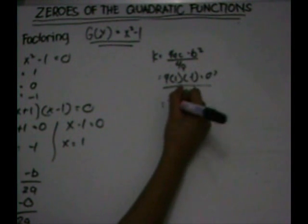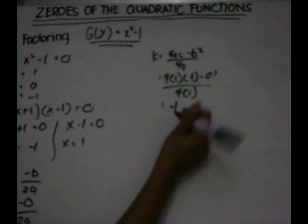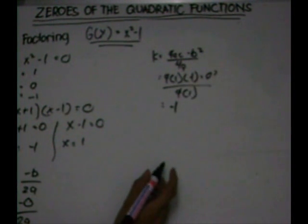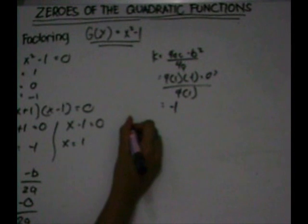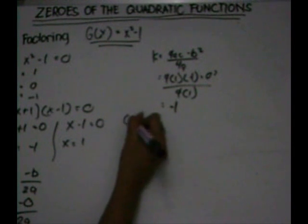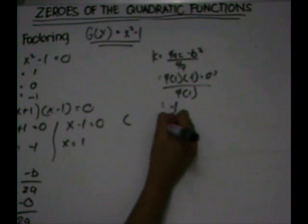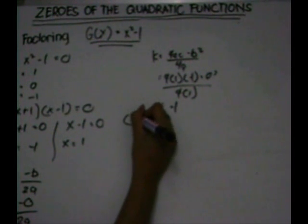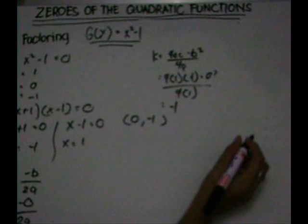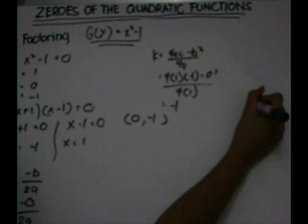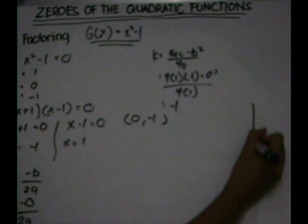We'll get negative one. We'll have a vertex at zero, negative one.